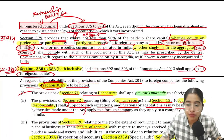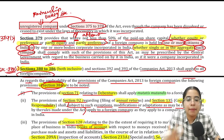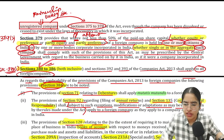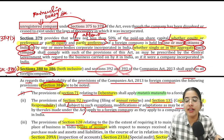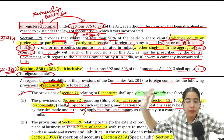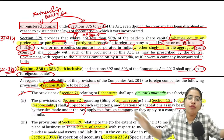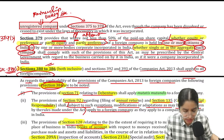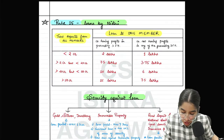Section 379 Subsection 1 talks about applicability — which sections will be applicable to a foreign company. It says that Sections 382, 386, 392 and 393 will be applicable to all foreign companies.